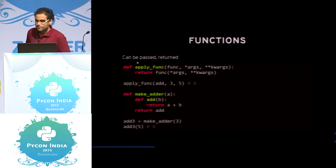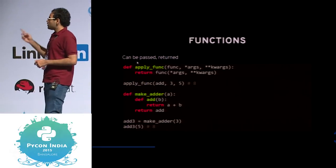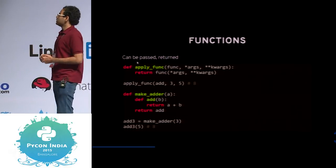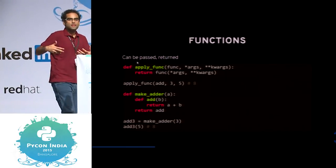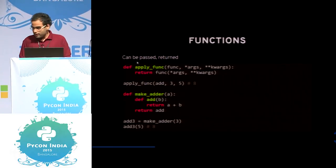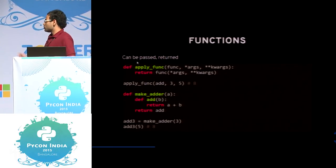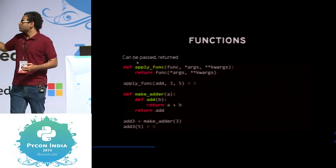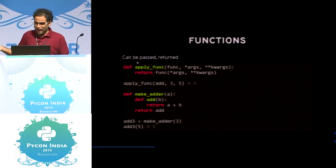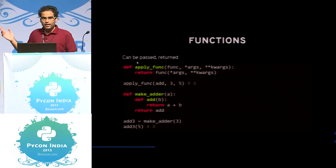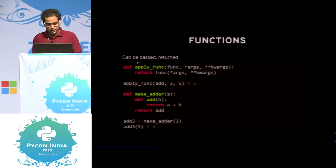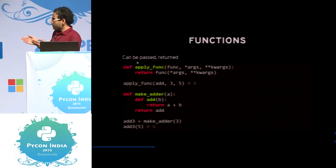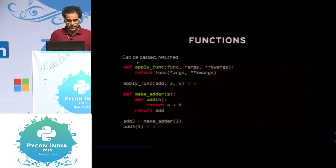Functions can be passed and returned. The first example is apply_func, which takes a function, takes a set of arguments, and returns that function applied on itself. Then there's closure — make_adder is a higher-order function that defines a function within that function and returns it. You can do add3 = make_adder(3), then add3(5), add3(10), it keeps adding on. If you make add4 = make_adder(4), then add4(5) returns 9.